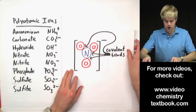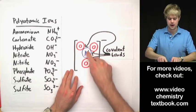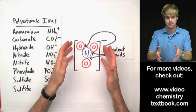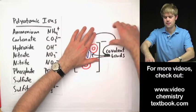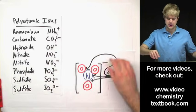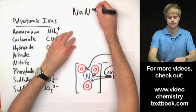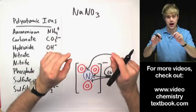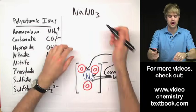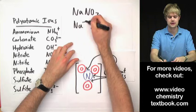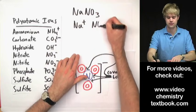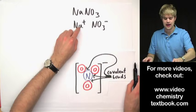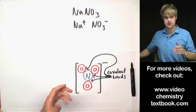There is a covalent bond here, a covalent bond here, and a covalent bond here keeping this clump of atoms together. This is a little tricky because it means that in a compound like sodium nitrate there are two types of bonding going on. There's ionic bonding because opposite charges are attracting — NA can take a charge of 1+, and NO3 has a charge of 1-, so the NA and the NO3 are stuck together because of ionic bonds.